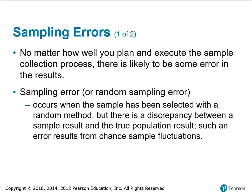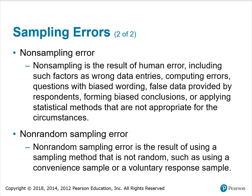Sampling errors occur no matter how well you plan and execute the sample collection process. Sampling error, or random sampling error, occurs when the sample has been selected with a random method, but there is a discrepancy between a sample result and the true population result — such an error results from chance sample fluctuations. Non-sampling error is the result of human error, including wrong data entries, computing errors, questions with biased wording, false data provided by respondents, forming biased conclusions, or applying statistical methods that are not appropriate for the circumstances. Non-random sampling error is the result of using a sampling method that is not random, such as using a convenient sample or a voluntary response sample.